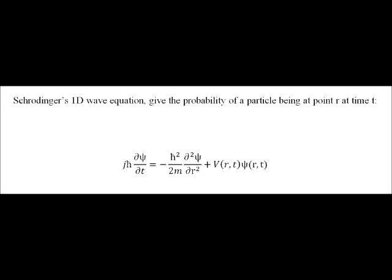Schrödinger's equation, seen here, is a function of space and time and the basis of quantum mechanics. It is the product of psi with its complex conjugate that indicates the probability of a particle being at point r at time t.